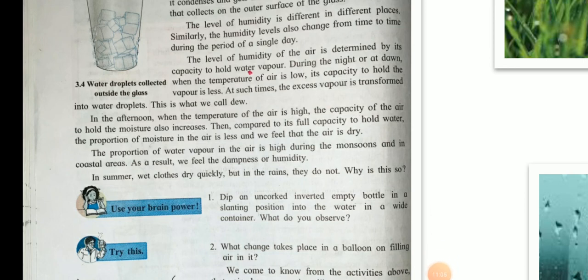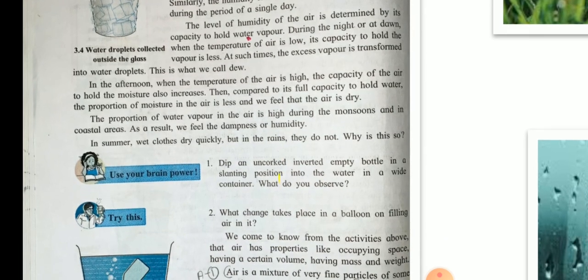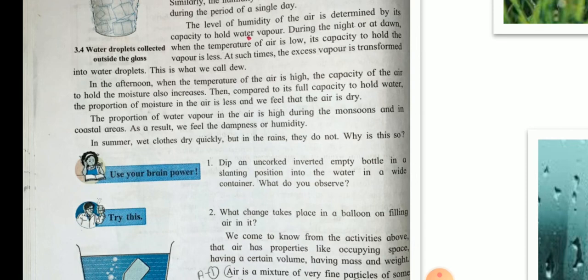The level of humidity is different in different places. Similarly, the humidity levels also change from time to time during the period of a single day. The level of humidity of the air is determined by its capacity to hold water. Humidity is the capacity of the air to hold water vapor. During the night or at dawn, when the temperature of the air is low, its capacity to hold the water vapor is less. At such times, the excess vapor is transformed into water droplets, that is, what we call dew.